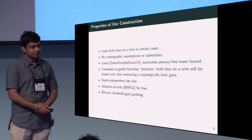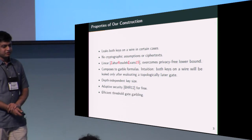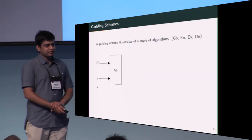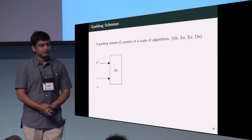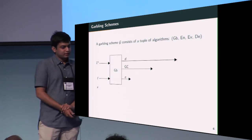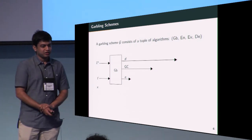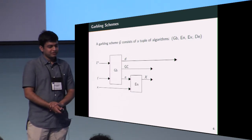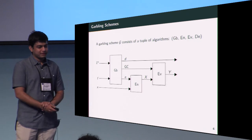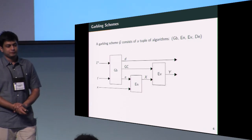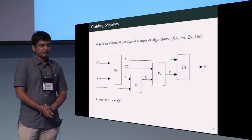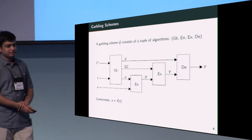We introduce efficient threshold gate garbling in the privacy-free setting. Some background: a garbling scheme consists of a tuple of algorithms: garble, encode, evaluate, and decode. The garble algorithm takes the circuit description and the security parameter and outputs a garbled circuit, encoding information, and decoding information. The encoding information is combined with the clear input to give a garbled input, which can then be evaluated on a garbled circuit to produce a garbled output. The garbled output is then decoded to a clear output. A natural correctness requirement is that the clear output obtained at the end of this procedure is the same as what we would have gotten if we had evaluated in the clear.